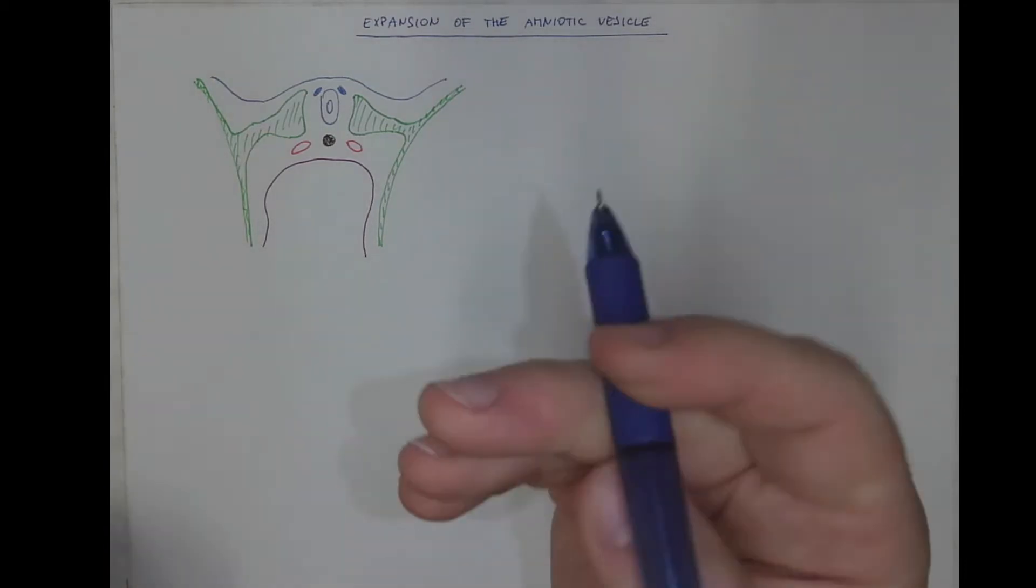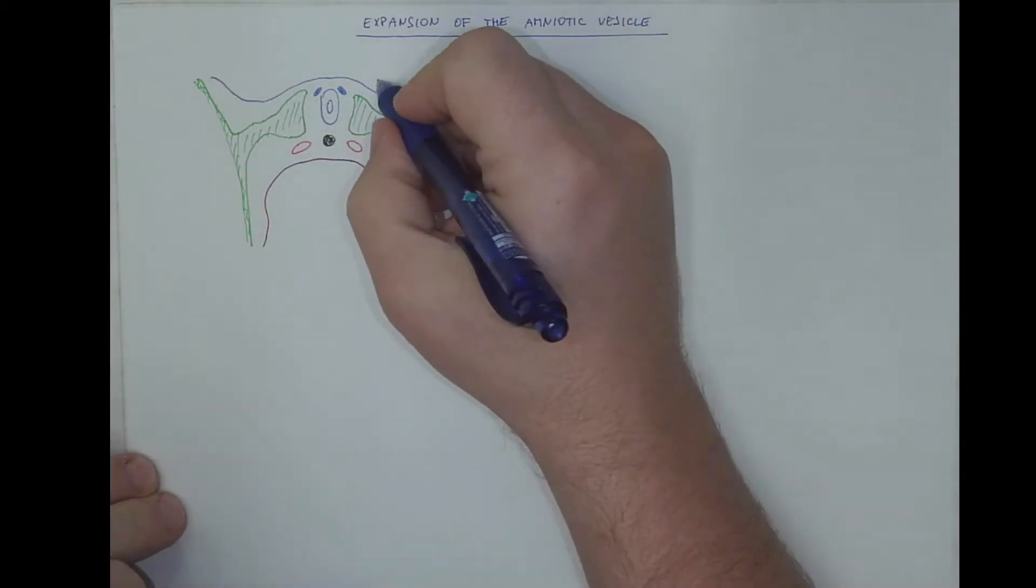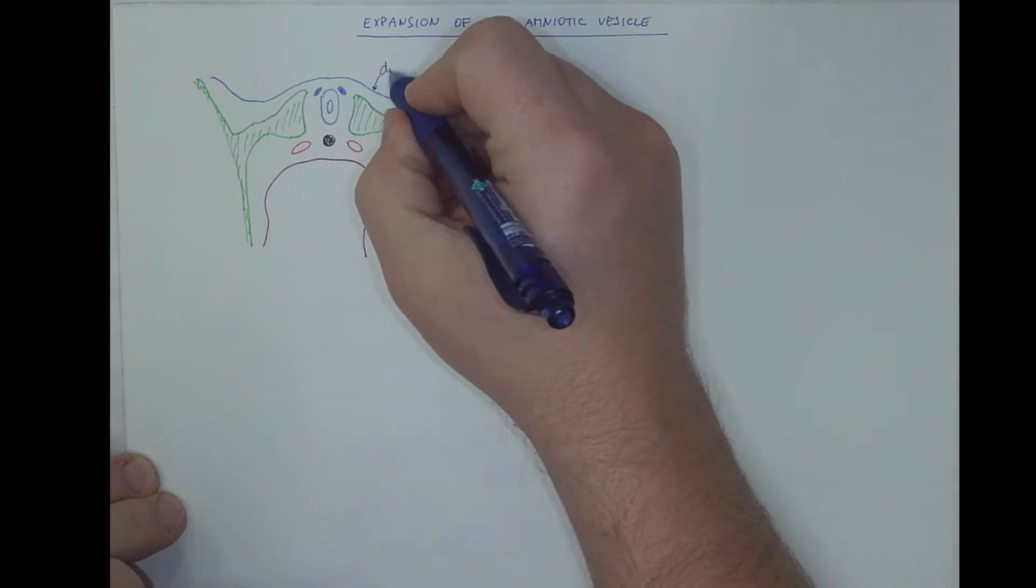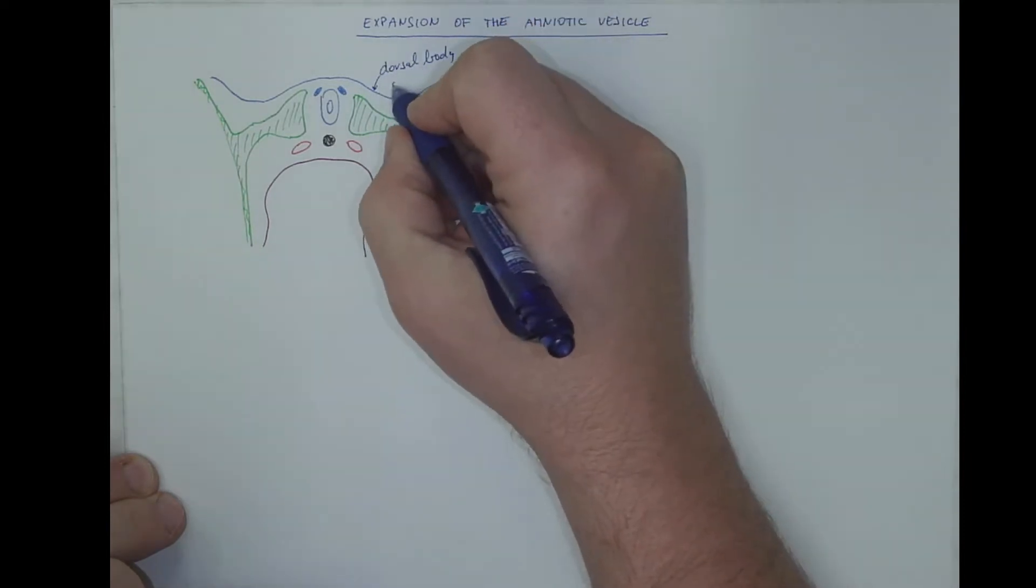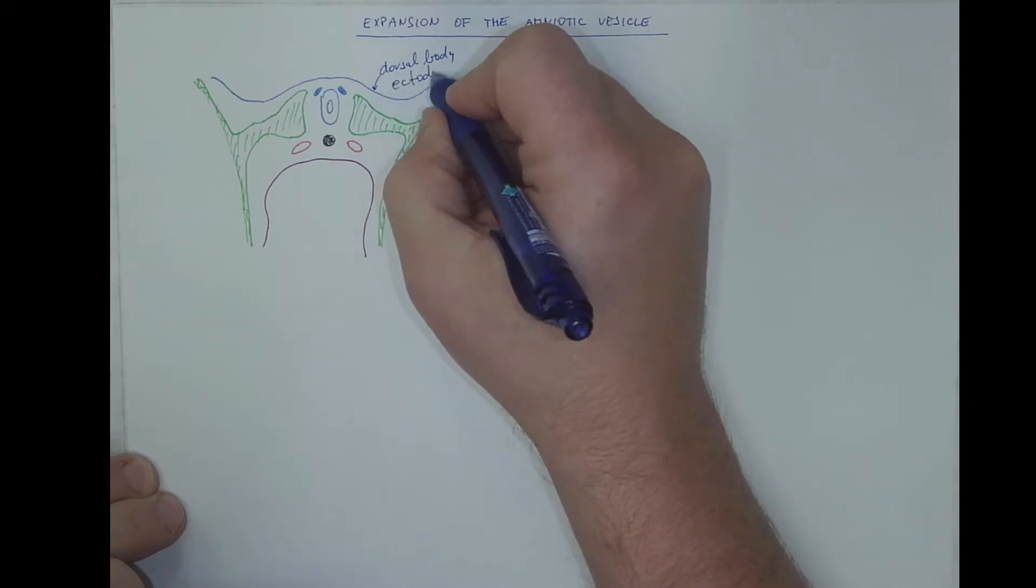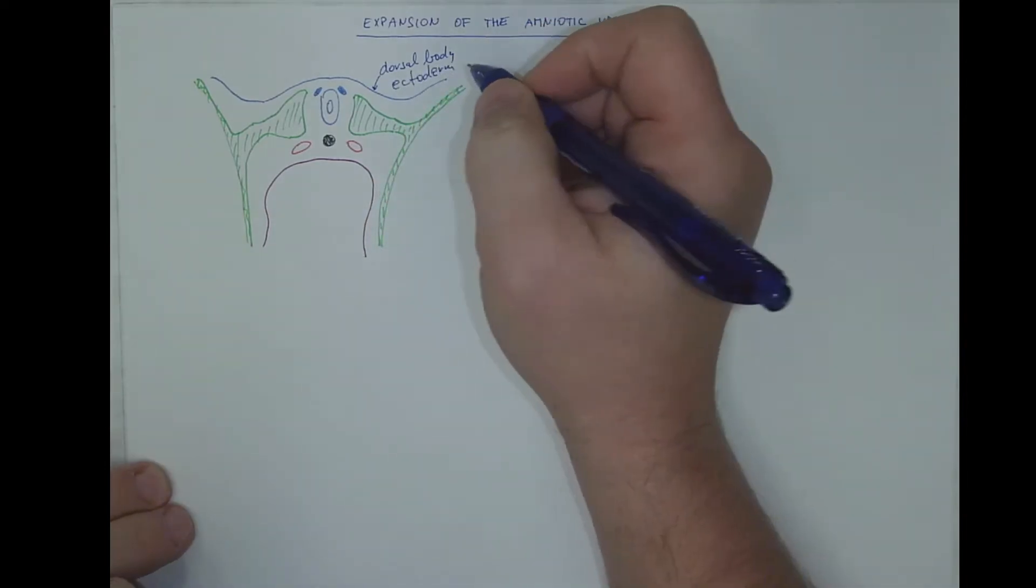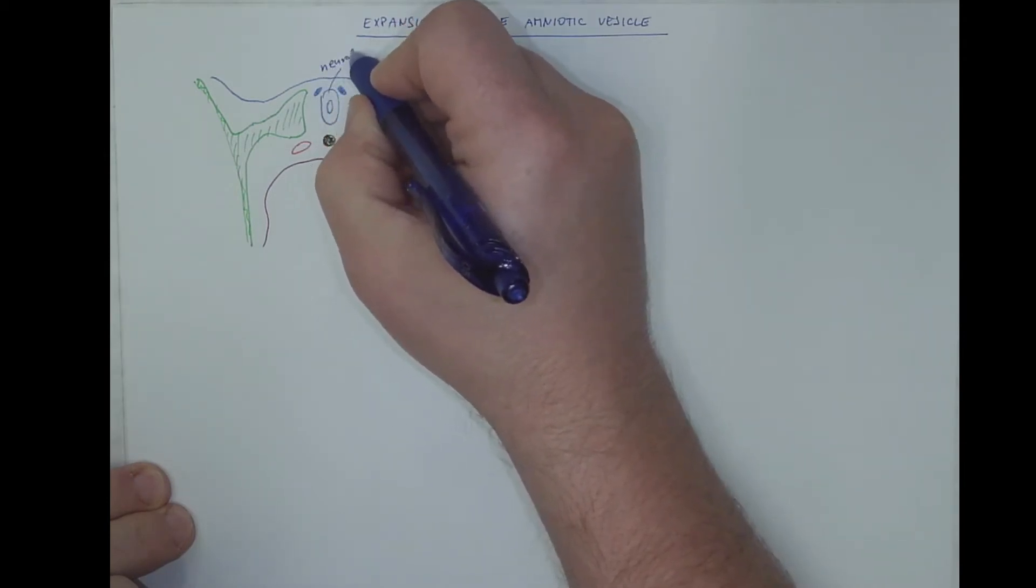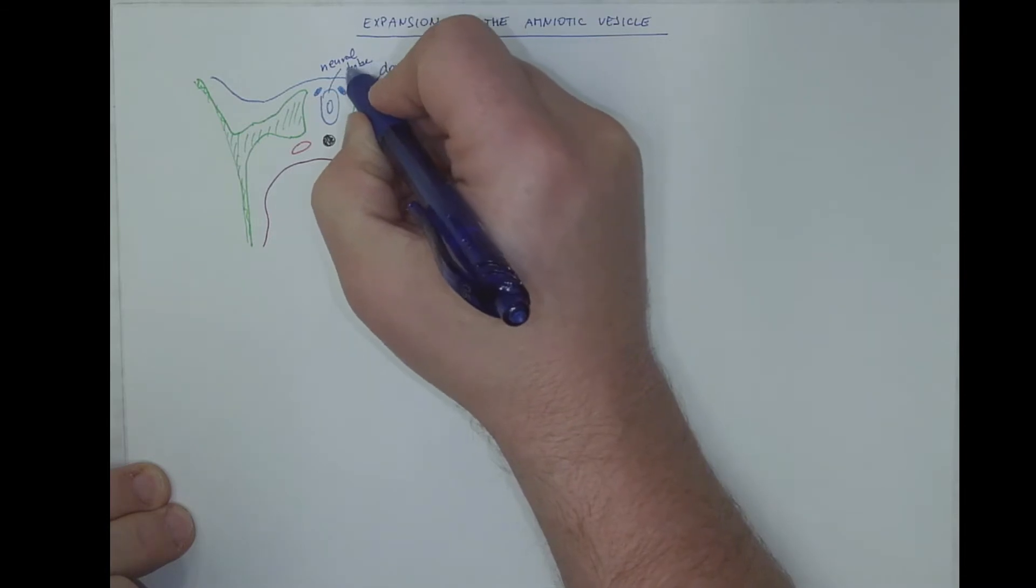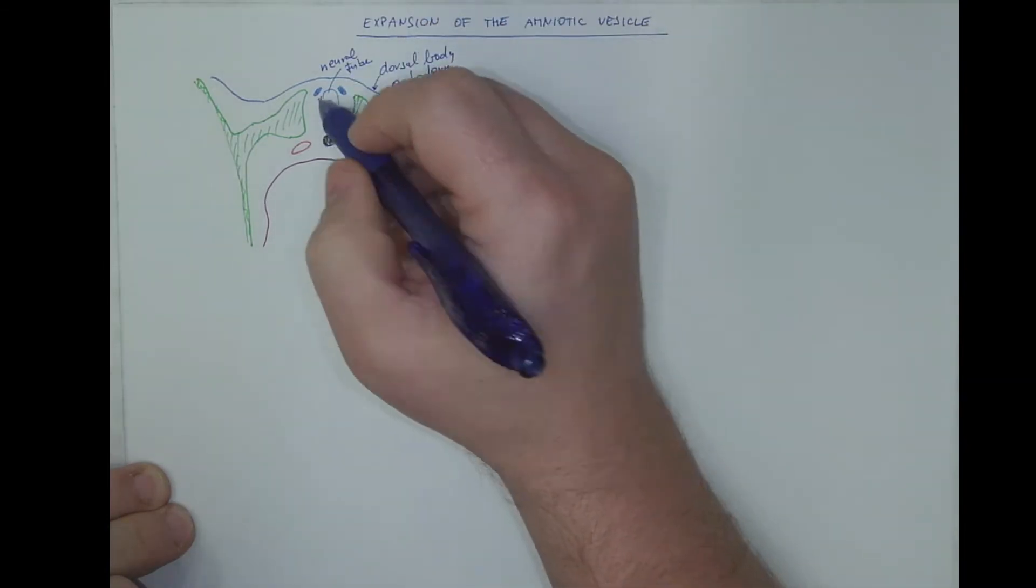Let's label the structures. This is the dorsal body ectoderm. This is the neural tube. This will form the central nervous system.